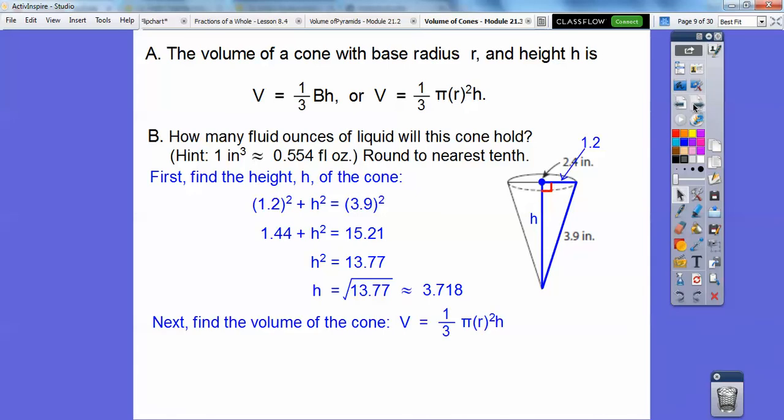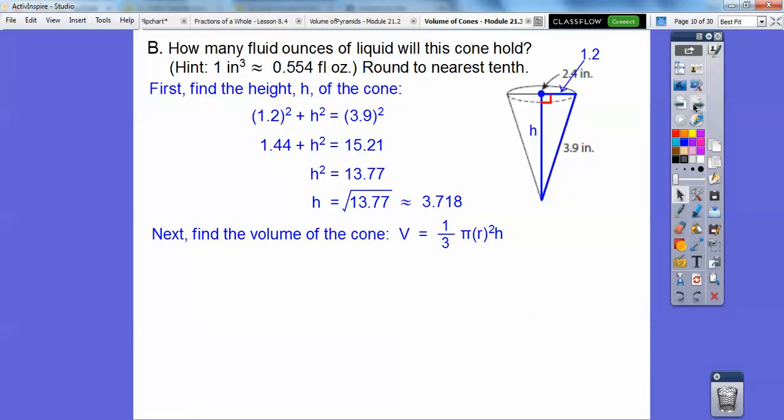So now we need to find the volume of the cone. So 1/3 base times height or 1/3 pi r squared times height. Let's slide that up right there. And then so if we plug in the numbers, we get about 5.596 inches cubed. So that's the volume of the cone.